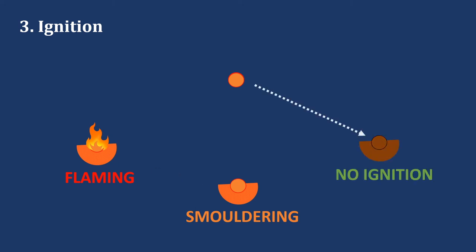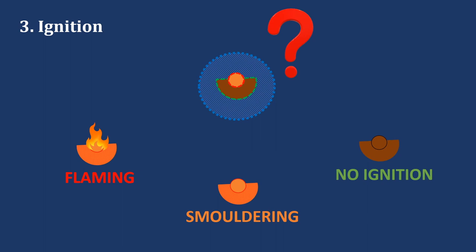It's also possible that the ember doesn't ignite the fuel it lands on. What will happen will depend on the conditions of the ember, for example how hot or how large it is, the condition of the target fuel, like how wet it is, and the conditions of the surrounding environment.